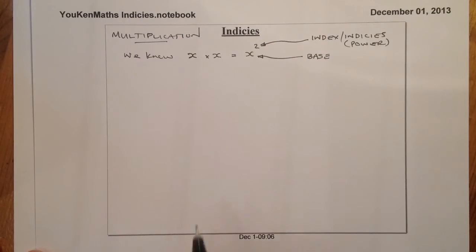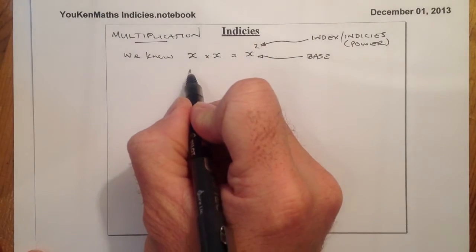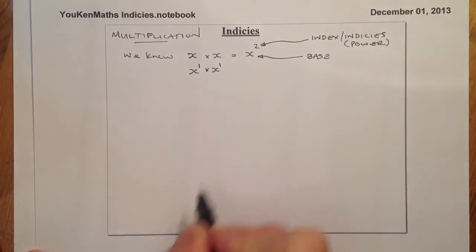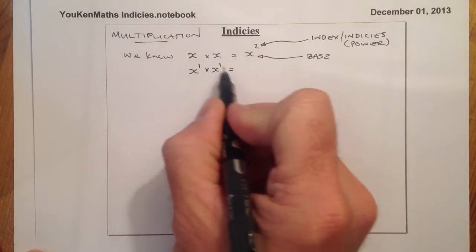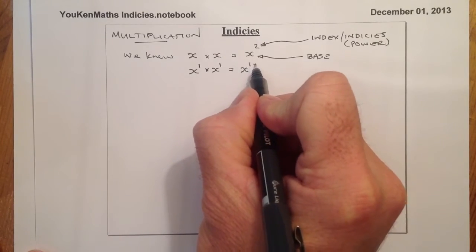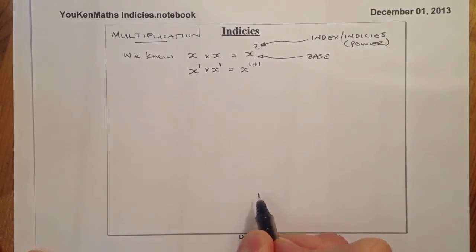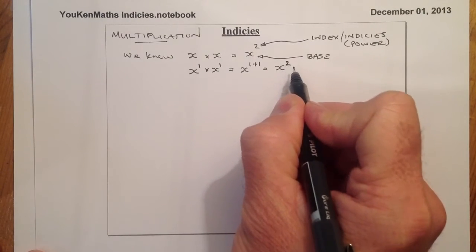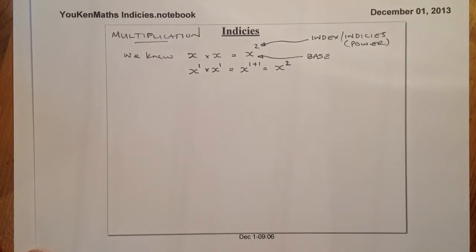So how does that work? Really what I've got here is x to the power of 1 times x to the power of 1. And the way that I work indices when I'm multiplying, we add the indices together, so it's 1 plus 1. So what that gives me is x to the power of 2, or as you know it, x squared.